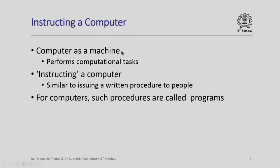Computers are also machines. Like other gadgets, we need to instruct these machines to perform desired tasks. The tasks which a computer performs are typically of a computing nature — indeed, that is the reason why it is called a computer. In the case of a computer, instructions are not given by pressing buttons and setting knobs. Instead, instructions to a modern computer are given much like we issue detailed instructions or a written procedure to people. A computer requires a set of such instructions which, when executed in the specified order, accomplish the desired computation.